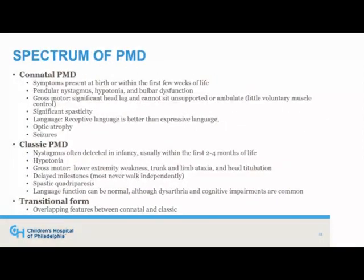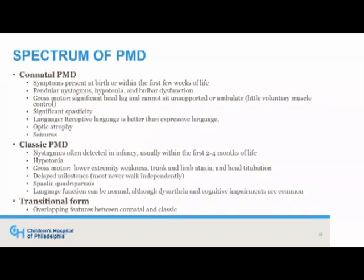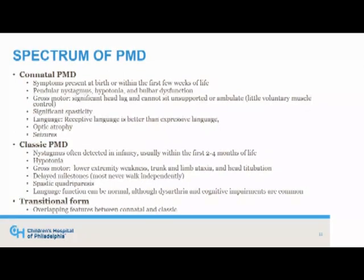The spectrum of PMD clinical features — even though we think of these as different phenotypes, it is really a spectrum with considerable overlap. The conatal or most severe form presents at birth or within the first few weeks of life. Typical features include pendular nystagmus, hypotonia, and bulbar dysfunction including bulbar weakness, stridor, and even respiratory distress. Gross motor symptoms occur early, including significant head lag. These individuals don't learn to sit unsupported and cannot ambulate. They have significant spasticity, some language mostly receptive, and also optic atrophy and at times seizures.